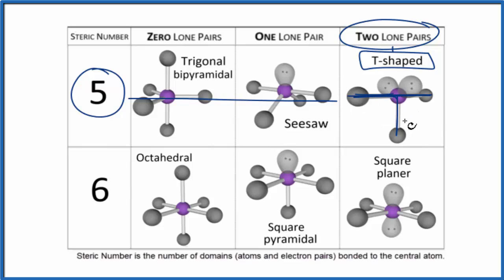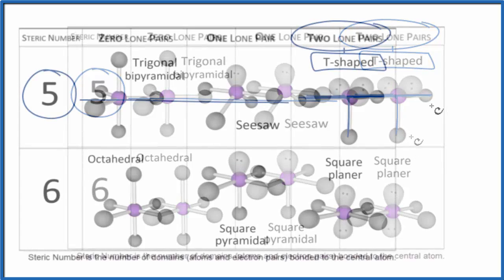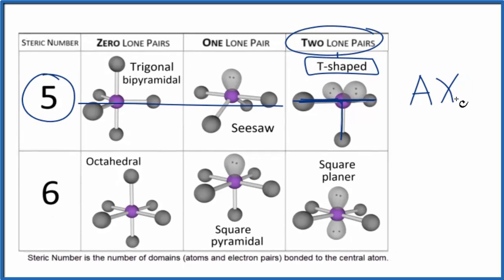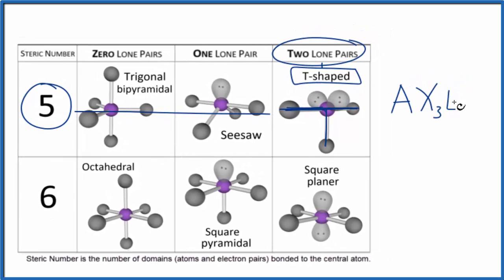We could also use what's called the AXE notation to figure out the molecular geometry. So A, that's the central atom, the iodine. X, that would be the atoms, the bromine atoms. We have one, two, three. And then E, those are the lone pairs. We have two lone pairs. So this would be AX3E2. And if you look that up on a table for molecular geometry, you'd again see it would be T-shaped or an approximate T-shaped.